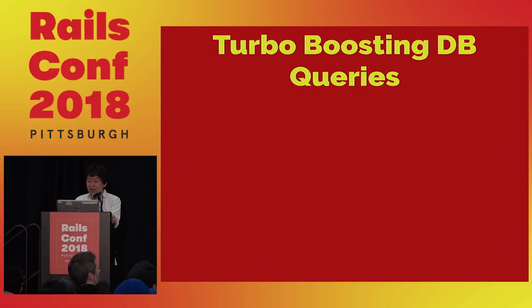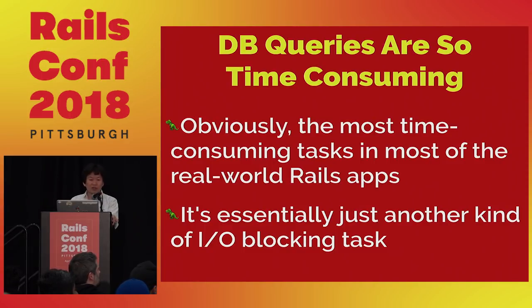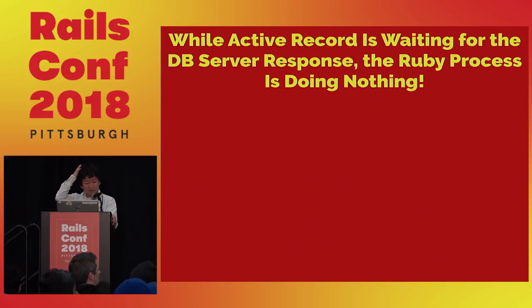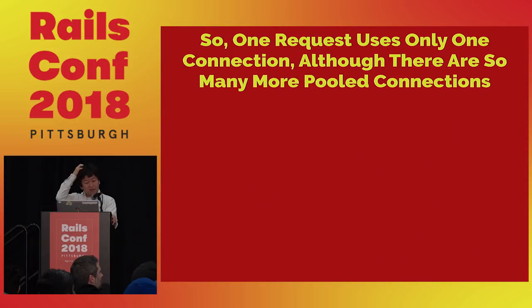The next topic is boosting database queries. Database queries are time-consuming — obviously — and they're essentially just another kind of IO-blocking task. While querying the database, the main thread is just sleeping. This is how ActiveRecord handles database connections: it checks out a connection from the pool per each thread, including the main thread, so one request uses only one connection. But the connection pool actually has many more pooled connections.